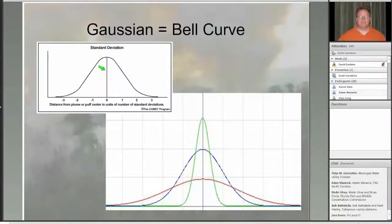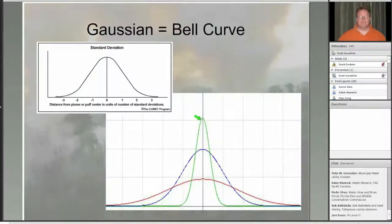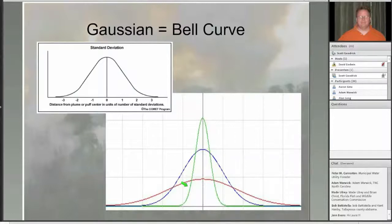What the Gaussian plume model does is along the center line of the plume is where the highest concentration is always going to be. The concentration decays off to the sides of the plume. As the plume moves downwind, you start with a high concentration near the source that hasn't spread out much. As it moves further downwind, it spreads out more. Generally, the area under each of these curves is exactly the same — the same amount of smoke, just spread through a larger area, reducing concentration.